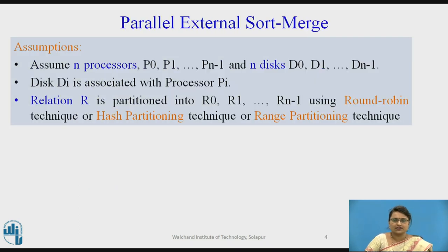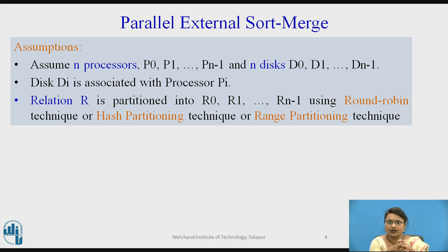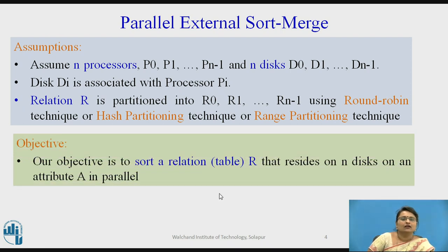Before starting, a few assumptions: we have n number of processors and n number of disks, labeled p0, p1, ..., p(n-1) and d0, d1, ..., d(n-1). A relation is already partitioned using some technique — round robin, hash partitioning, or range partitioning — giving partitions r0, r1, ..., r(n-1). Our objective is to sort a relation r residing on n disks on a particular attribute a.